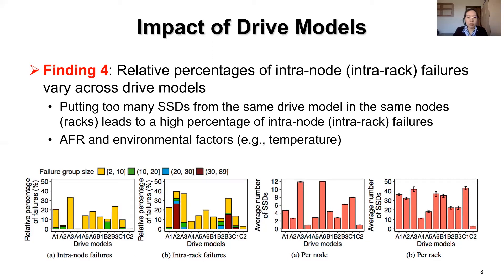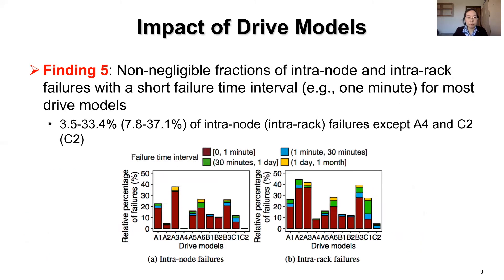However, we also find that the AFR and environmental factors, for example temperature, affect the relative percentages of intranode and intrarack failures. We vary the thresholds of the failure time interval broken down by drive models, and find that intranode and intrarack failures with a short failure time interval account for non-negligible percentages for most drive models.